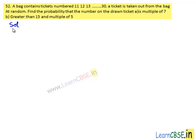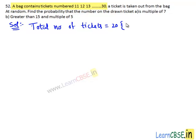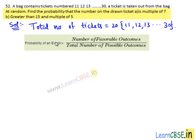Moving on to the solution. A bag contains tickets numbered 11, 12, 13, so on up to 30. So total number of tickets equals 20, which are tickets with numbers 11, 12, 13, so on up to 30. A ticket is taken out at random. We need to find the probability that the number on the drawn ticket is a multiple of 7, greater than 15 and multiple of 5. We know that probability of an event is the ratio of number of favorable outcomes to the total number of possible outcomes.